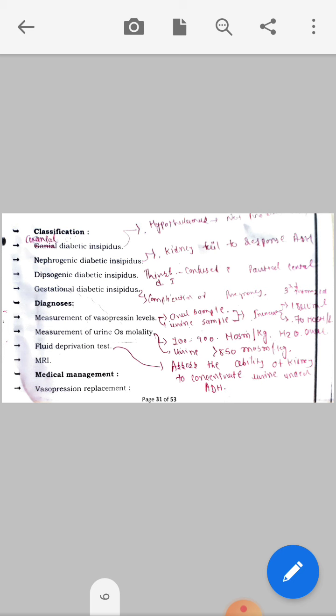Dipsogenic diabetes insipidus: In this, there is polydipsia, which is excessive thirst as a clinical manifestation. This can be confused with partial central diabetes insipidus. Next is gestational diabetes insipidus, which is commonly seen in the gestational period of mother in the third trimester.